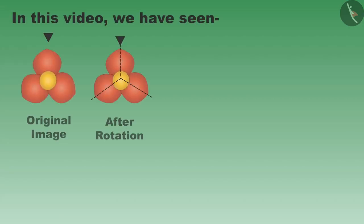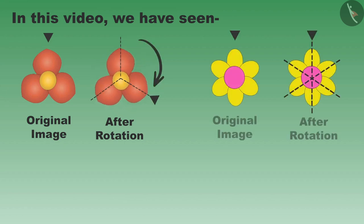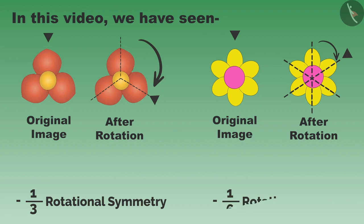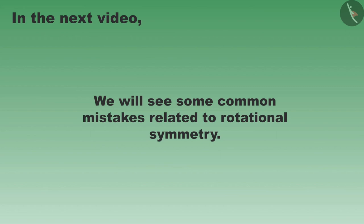Children, in this video we have seen some objects and shapes that do not change their shape even after one-third and one-sixth rotation. These objects have one-third, that is one-by-three, rotational symmetry and one-sixth, that is one-by-six, rotational symmetry. In the next video we will see some common mistakes related to them. Thank you.